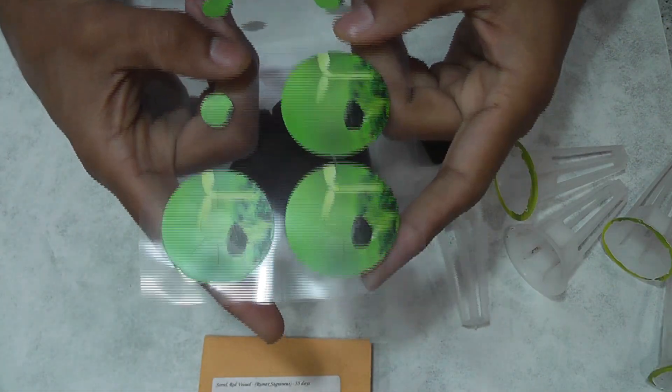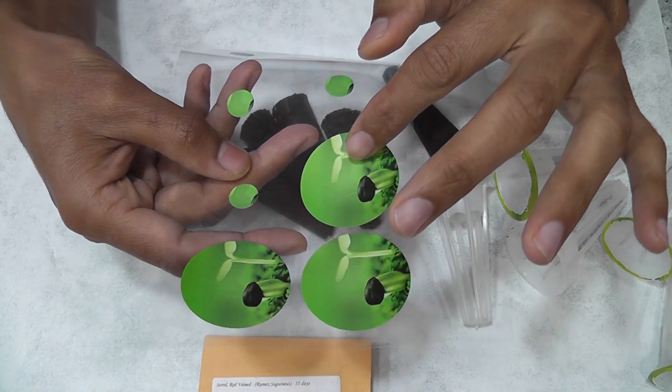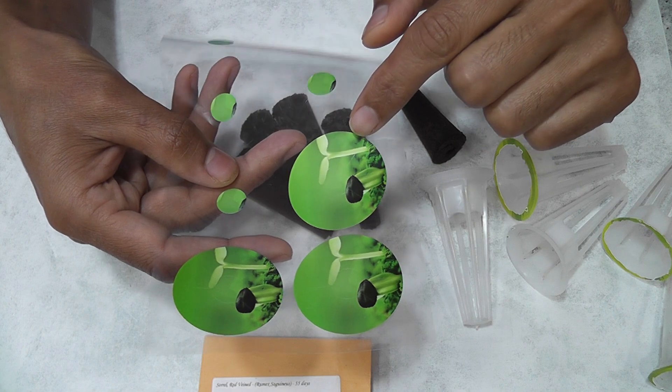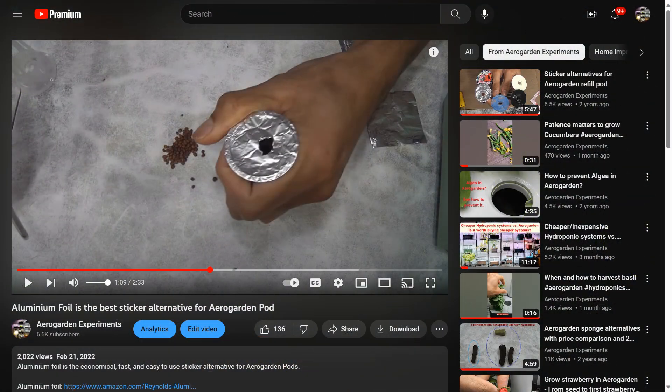Third thing is the stickers. Again, I just go with some off-brand stickers. These are not perfect, but I can manage. Many times I just use some aluminum foil to cover the pods instead of using these stickers.